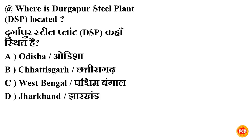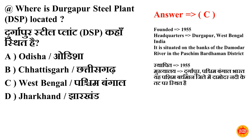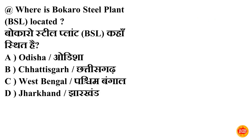Next question: where is the Durgapur Steel Plant located? Durgapur Steel Plant kahan sthit hai? Option C is correct — West Bengal. Durgapur Steel Plant sthapit hua 1955 mein. Durgapur Steel Plant Paschim Bardhaman jile mein Damodar nadi ke tat par sthit hai.